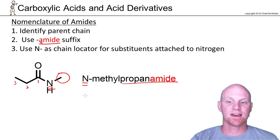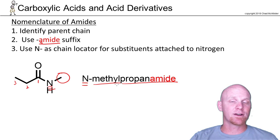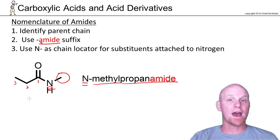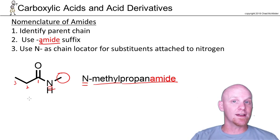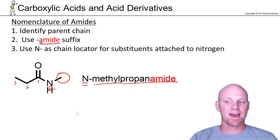So in this case we'll say N-methylpropanamide, and we'll see this again for amines later on in the course. For amides and amines, if I had another methyl on say carbon two, I might say N,2-dimethyl or 2,N-dimethyl. But in this case with just the one methyl, this is N-methylpropanamide.